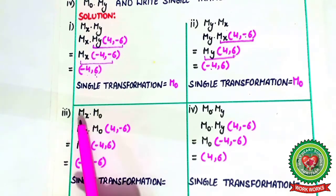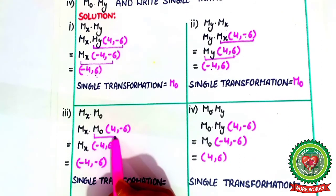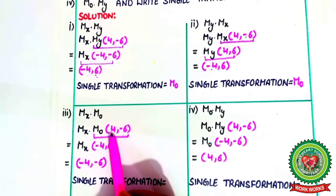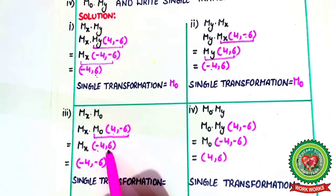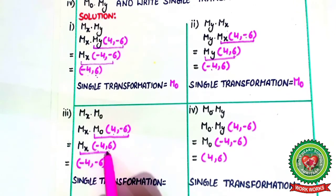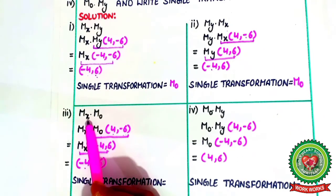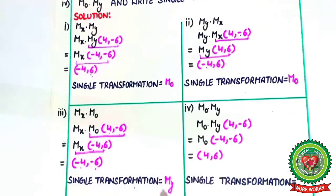Third part: reflection in x-axis and origin. First, reflection in origin for point (4, -6): both signs change, so +4 changes to -4 and -6 changes to +6. Now reflection in x-axis gives coordinates (-4, -6). This is the required coordinate. Single transformation: x-axis and origin are already done, so left out is reflection in y-axis.